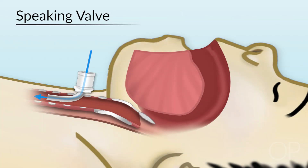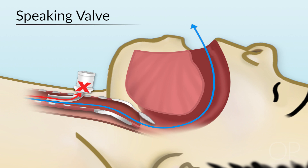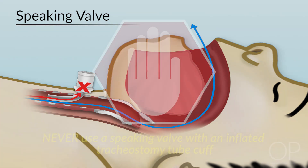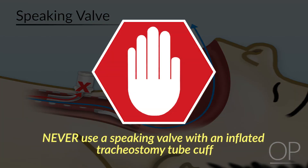When breathing in, air passes through the tracheostomy tube, but when breathing out or speaking, the valve is forced closed and the air travels around the tracheostomy tube and out of the mouth. It is important that a speaking valve must never be used with an inflated tracheostomy tube cuff, as air trapping will occur and patients can develop a tension pneumothorax, which can be fatal if not recognized promptly.